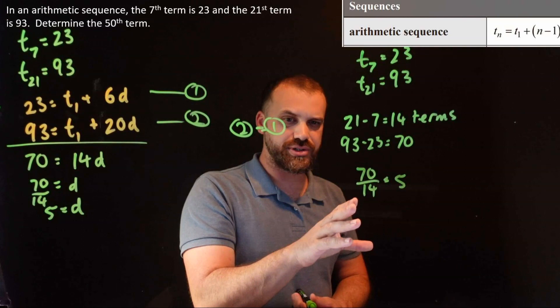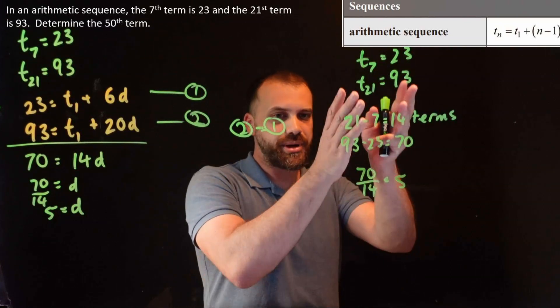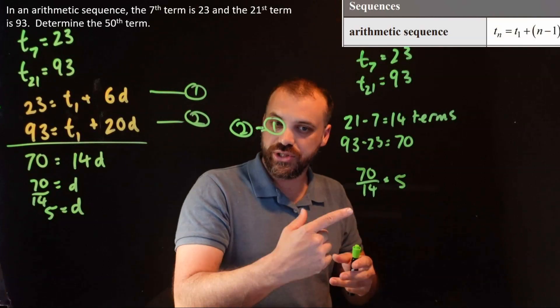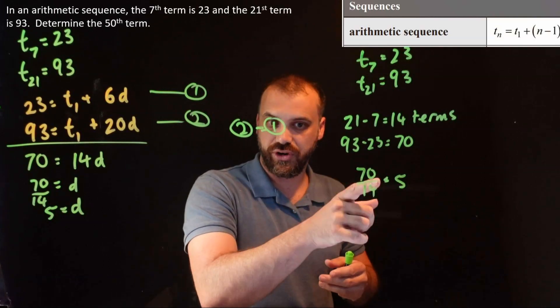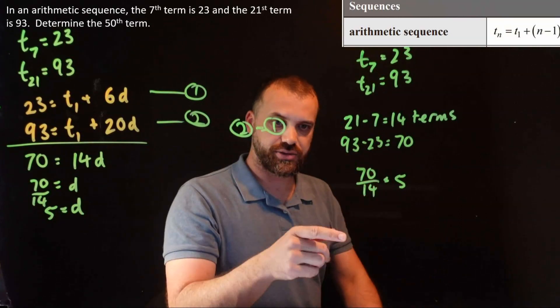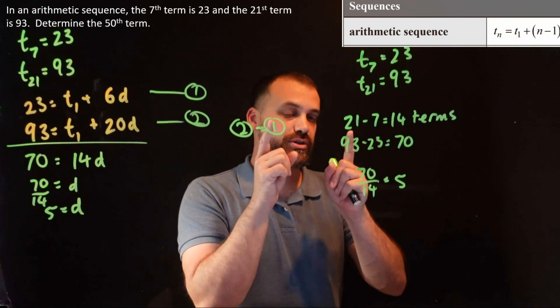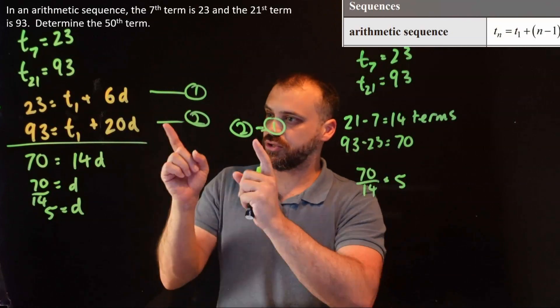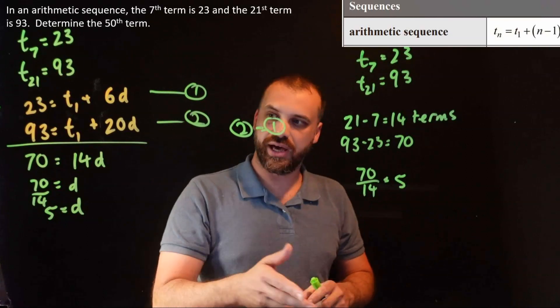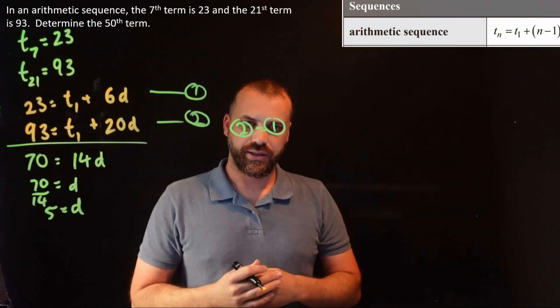Now, this is a very non-standard way of doing this. Not many people do it this way, but I wanted to show it to you because you can do this. You can find this common difference of 5 without having to do simultaneous equations. You can logic your way to this answer. Now, whether you got to it this way or whether you got to it this way, the next step's going to be the same.